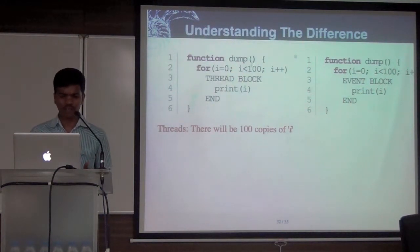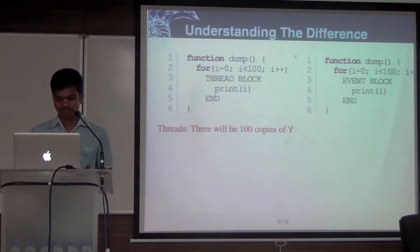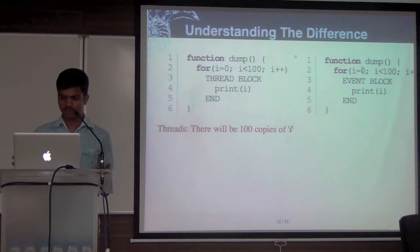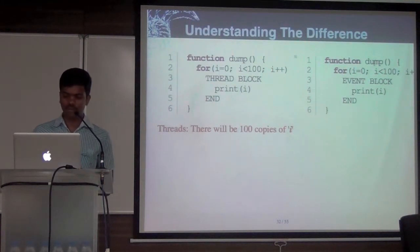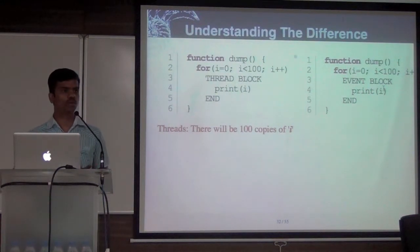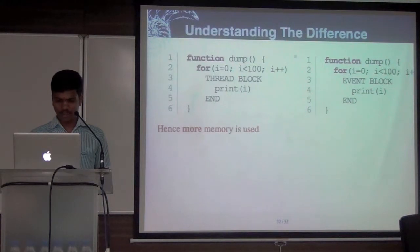So if you have infinite variables declared in the dump function, there's too much memory used within each and every thread. But in case of the event loop, the local variables from dump are not cloned into the event block. So all I'm doing is saving memory. The process which uses the event loop takes less memory.